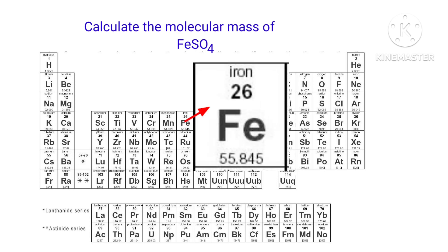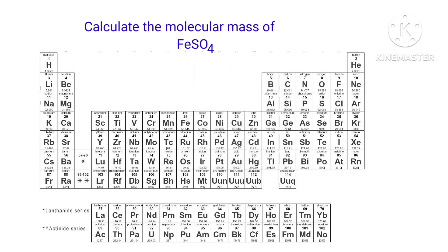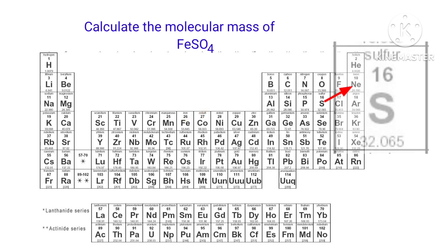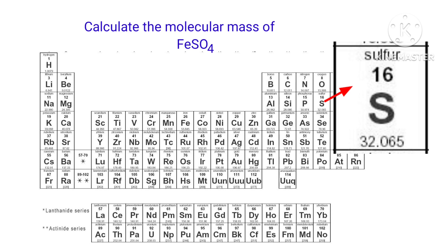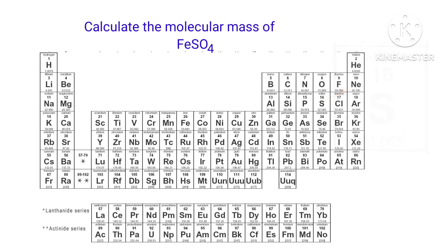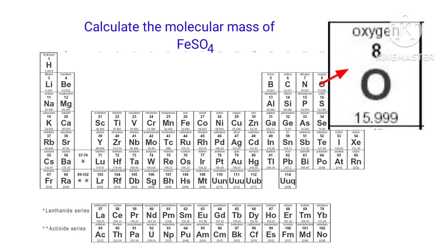The atomic mass of iron is 55.845. The atomic mass of sulfur is 32.065. The atomic mass of oxygen is 15.999.